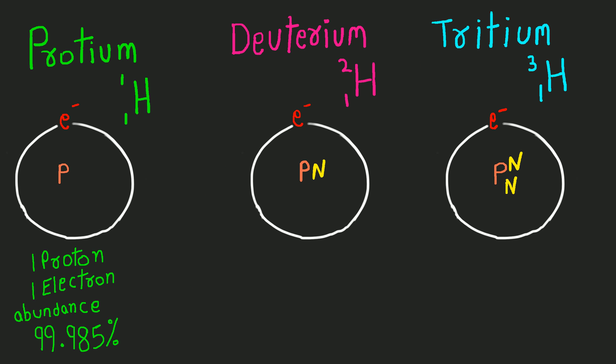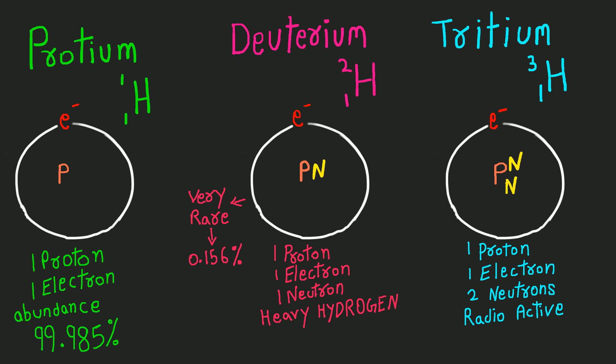Protium has one proton and one electron. Deuterium has one proton, one electron, and one neutron. Tritium has one proton, one electron, and two neutrons.